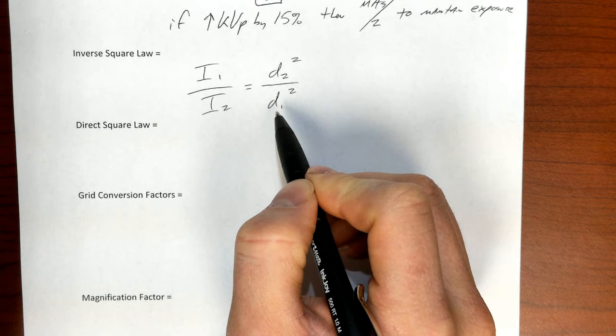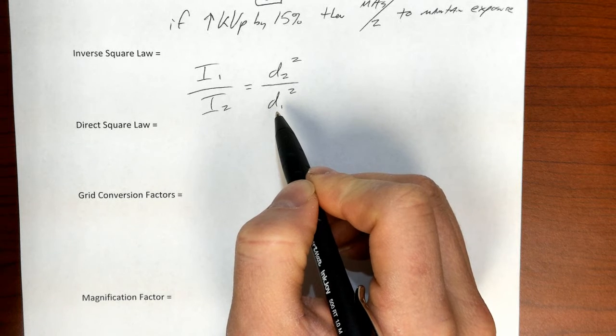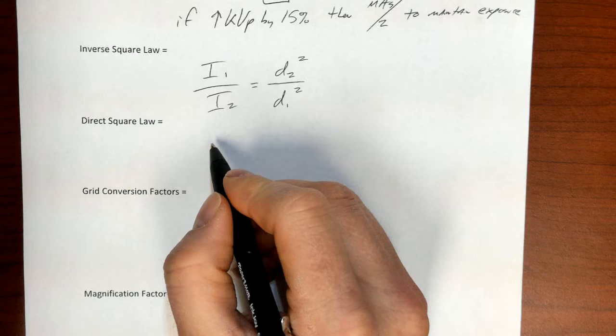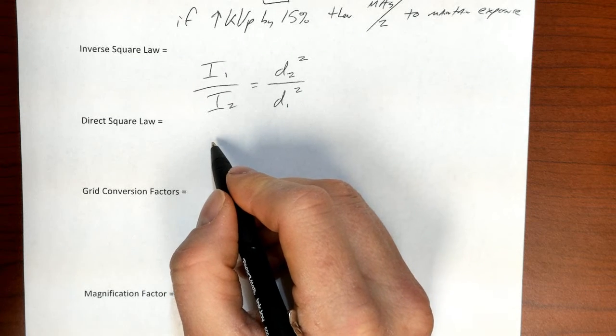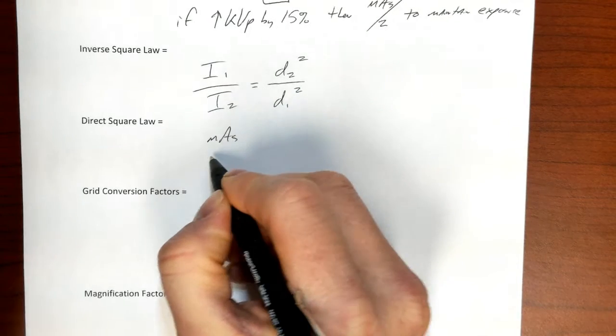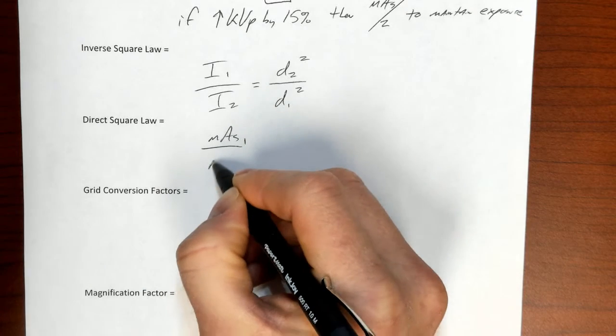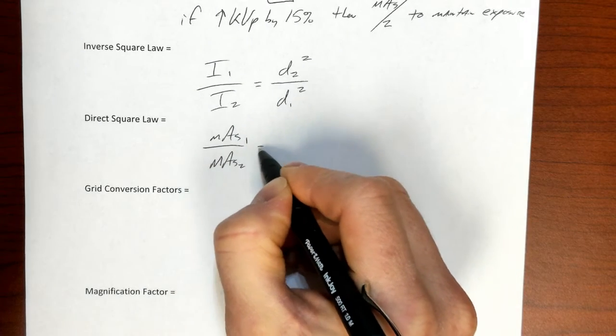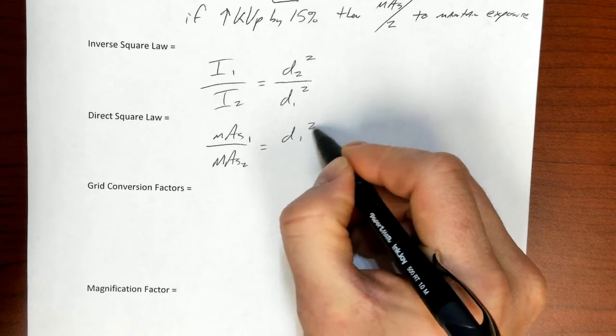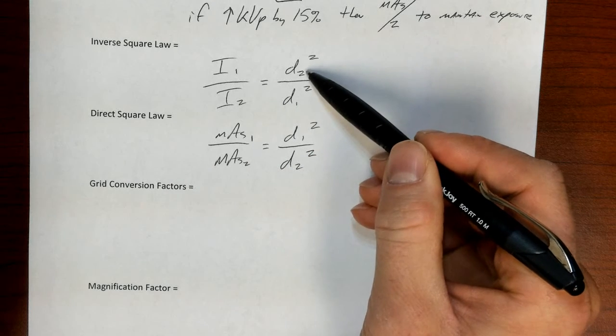How to decrease dose by maximizing distance from a source of radiation. The way that we tend to think about it as x-ray techs and when we're thinking about patient imaging is more as an expression of mAs. So this is the direct square law. Because of this change in intensity, we need to maintain mAs. So mAs 1 over mAs 2, and this is a direct proportion, so we've got distance 1 squared over distance 2 squared.